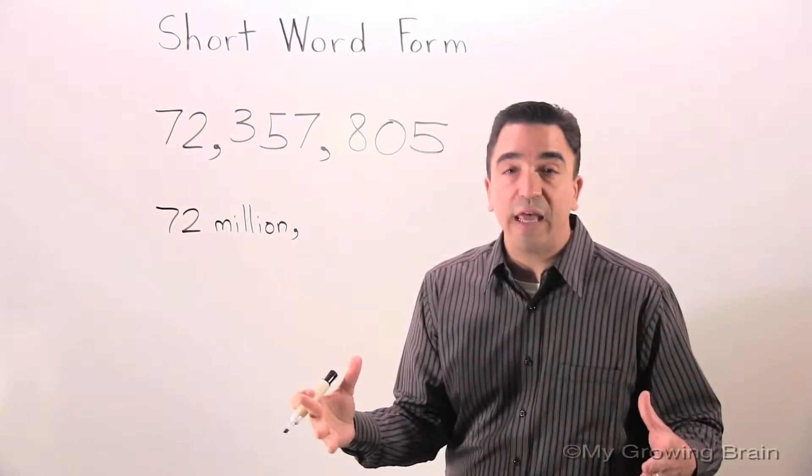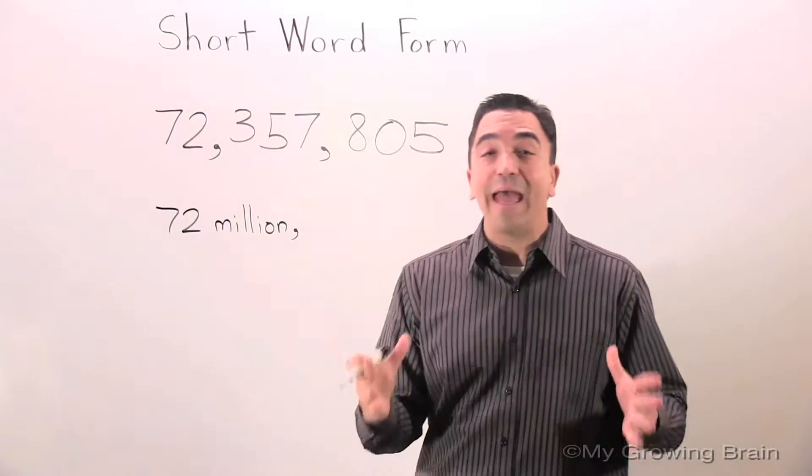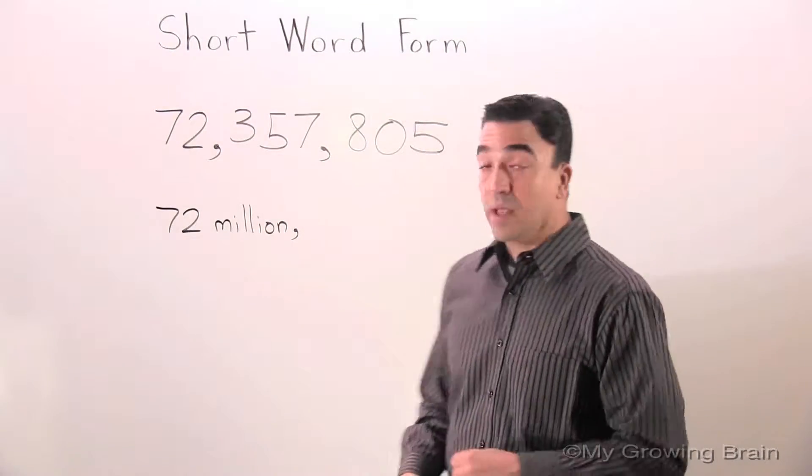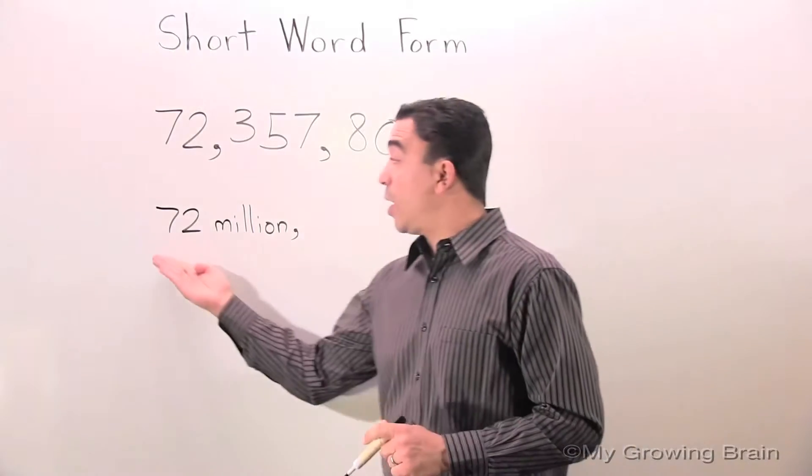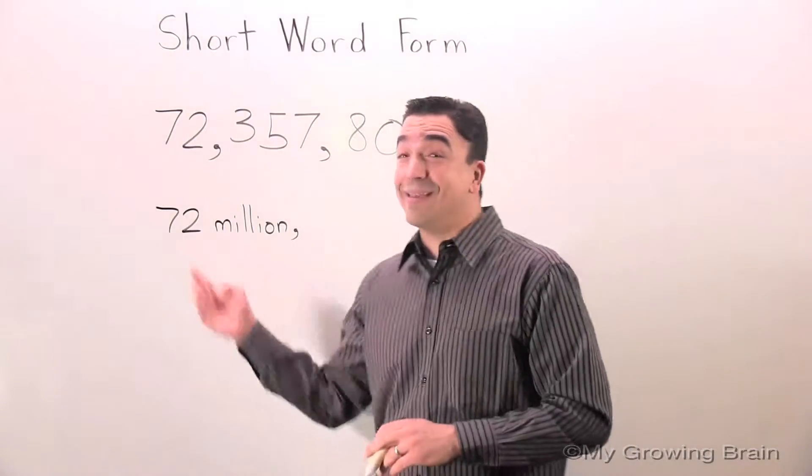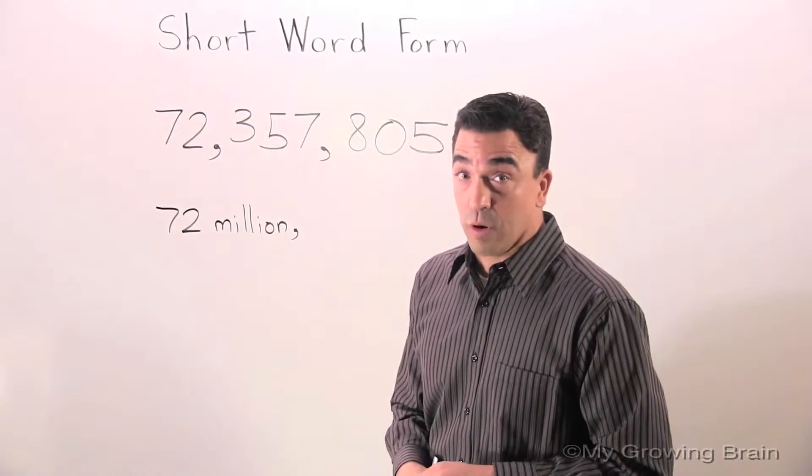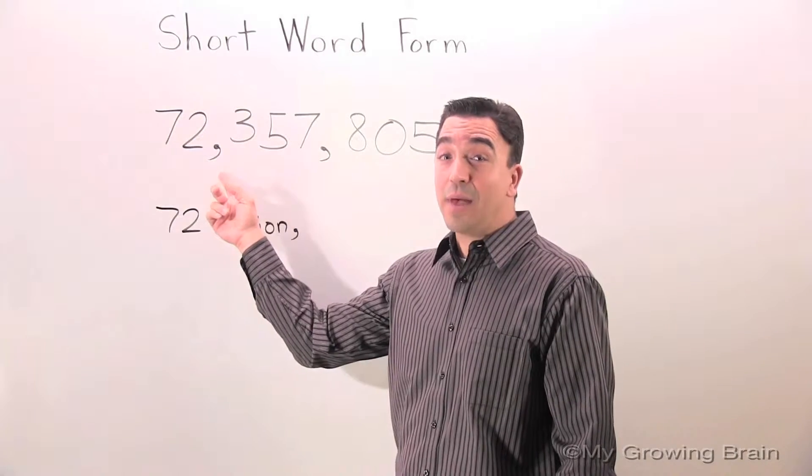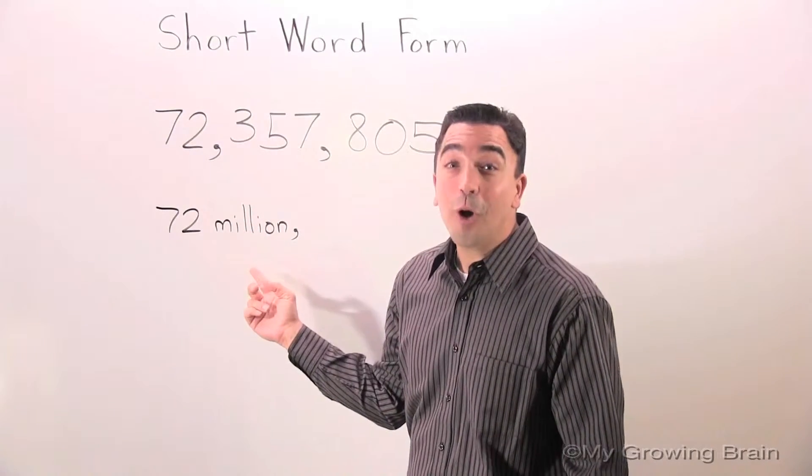You can see there's a big difference between word form and short word form. In word form, we only use words. In short word form, we use digits and words. Also, a little tip for you: anytime you see a comma, you write a word.